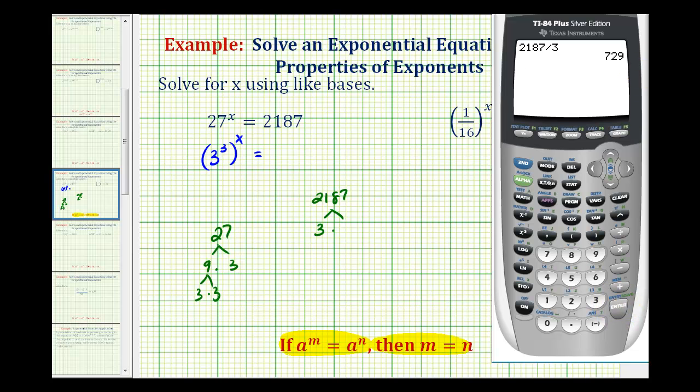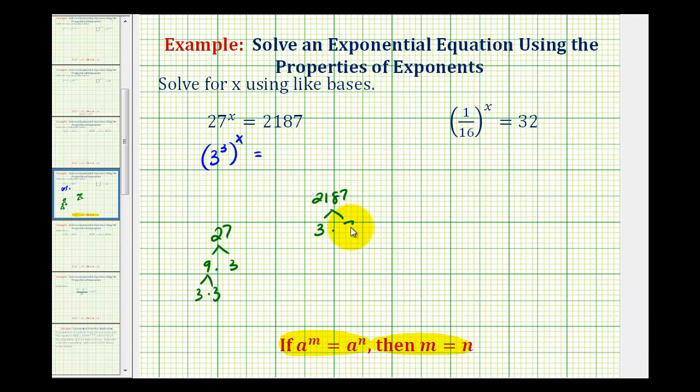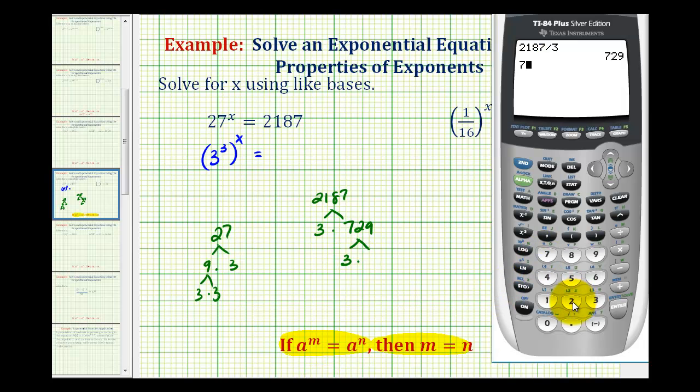It's equal to 729, 729 is also divisible by 3, and if we need to, we can use the calculator again. 729 divided by 3 is equal to 243.